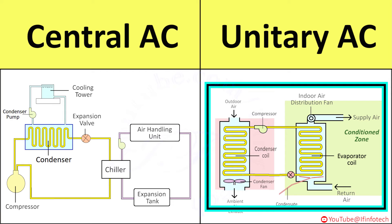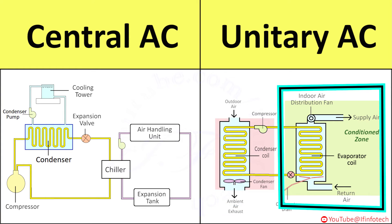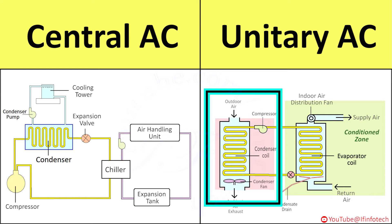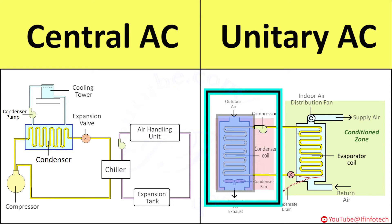Unitary AC consists of two units. The indoor room unit consists of an evaporator coil, evaporator blower, and capillary tube, and is situated inside the room to be air conditioned. The outdoor unit consists of a compressor, condenser, and motor-driven fan.